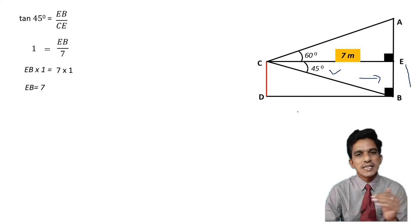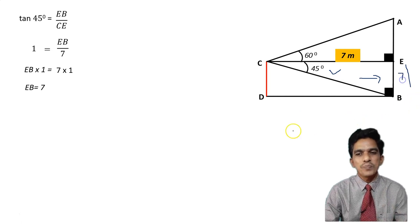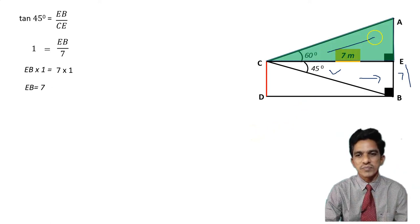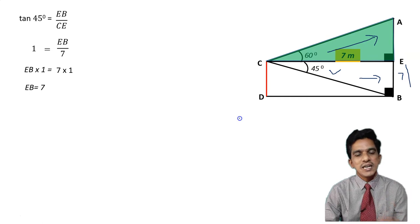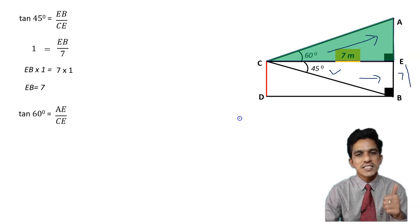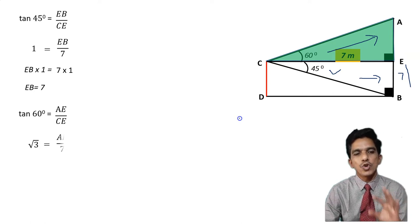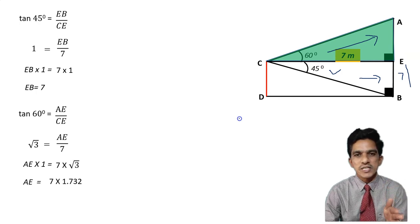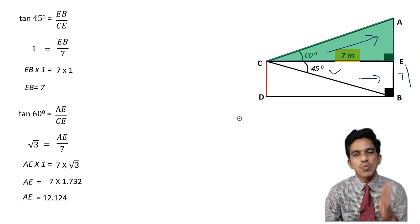Now consider the upper triangle ACE. The angle at C is 60 degrees, AE is the opposite side, and CE is the adjacent side. Taking tan 60: tan 60 = AE / CE = AE / 7. Since tan 60 = √3, we get AE = 7√3. Since √3 = 1.732, AE = 7 × 1.732 = 12.124 meters.